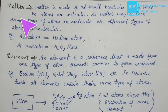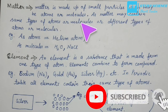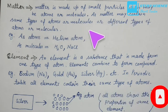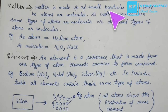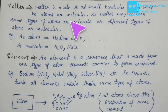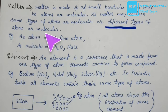Matter is made up of small particles which may be atoms or molecules. Matter may contain the same type of atoms or molecules, or different types of atoms or molecules. For example, helium atom is a matter made of same-type atoms, while water (H₂O) and NaCl are matter containing different atoms.